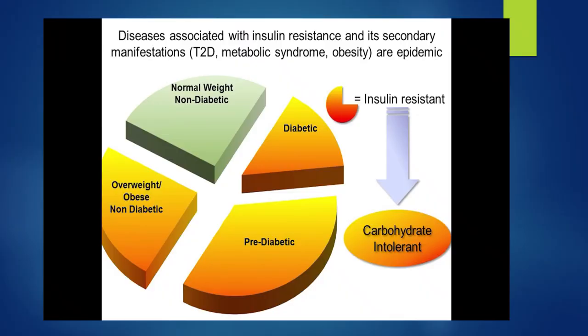This is an old slide from 2015. During this time, it shows that only 25% of the population are healthy, and the rest — 75% — are sick and insulin-resistant. Some of them are diabetic, some are pre-diabetic, some are overweight, obese and non-diabetic with no symptoms. Also, some of them are carbohydrate-intolerant.